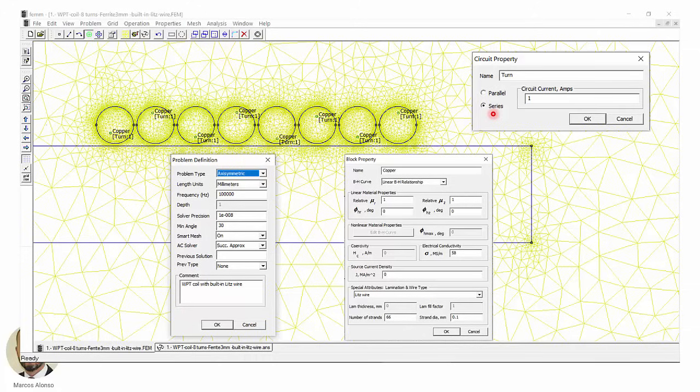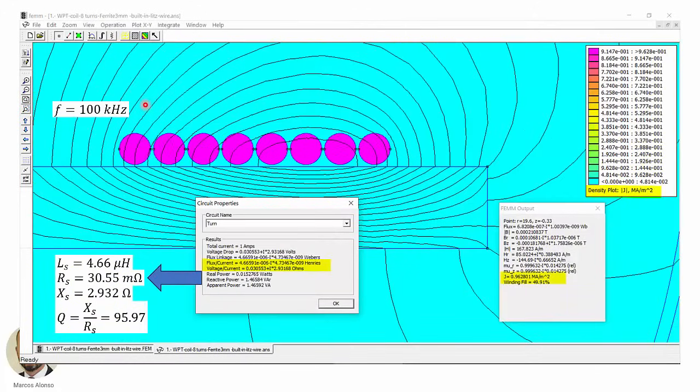And here we have the results of the analysis at 100 kilohertz. We are representing here the density plot of the current density in amperes per square millimeter. We can see that the program represents the current density inside the turns as uniform.